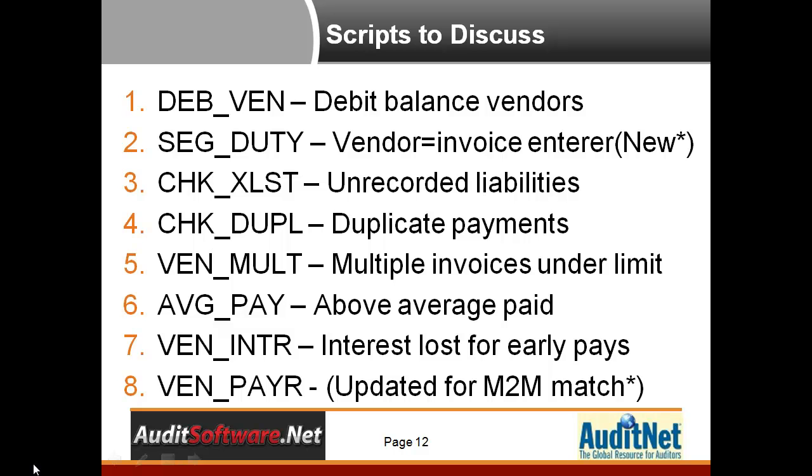Above average paid takes a look at invoices that exceed a vendor's average by a multiple. Principal interest lost for early pays looks at the efficiency of how you pay things — if you are paying too quickly, it triggers this test and actually calculates an interest loss for paying early. Last but not least, the vendor pay script is the classic employee-to-vendor testing, except we've updated it with a many-to-many match, and I wanted to show you the differences there as well.